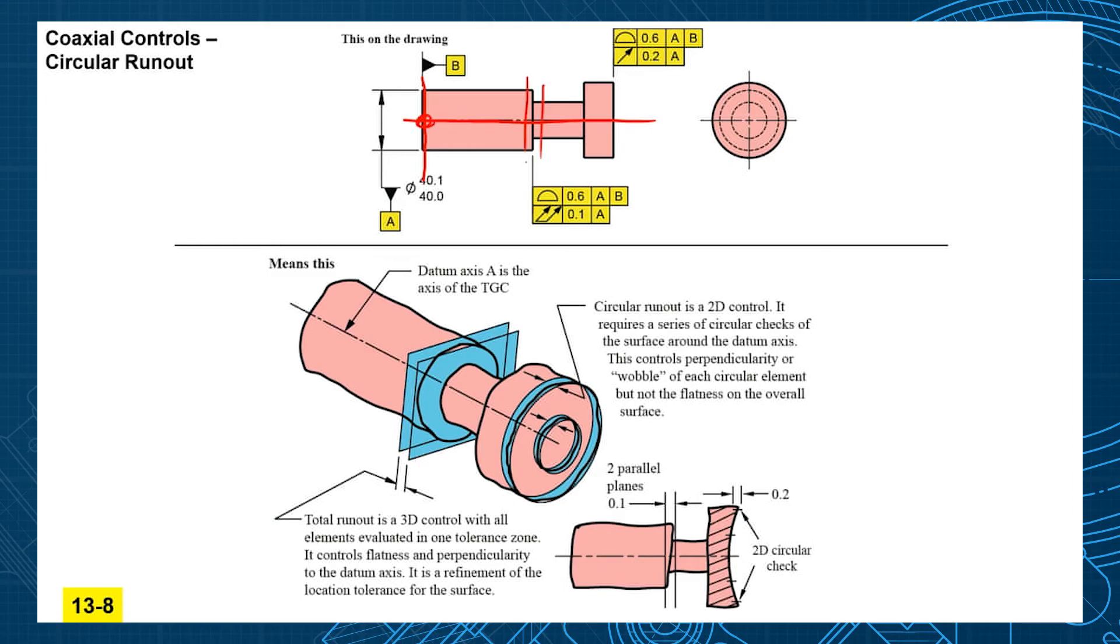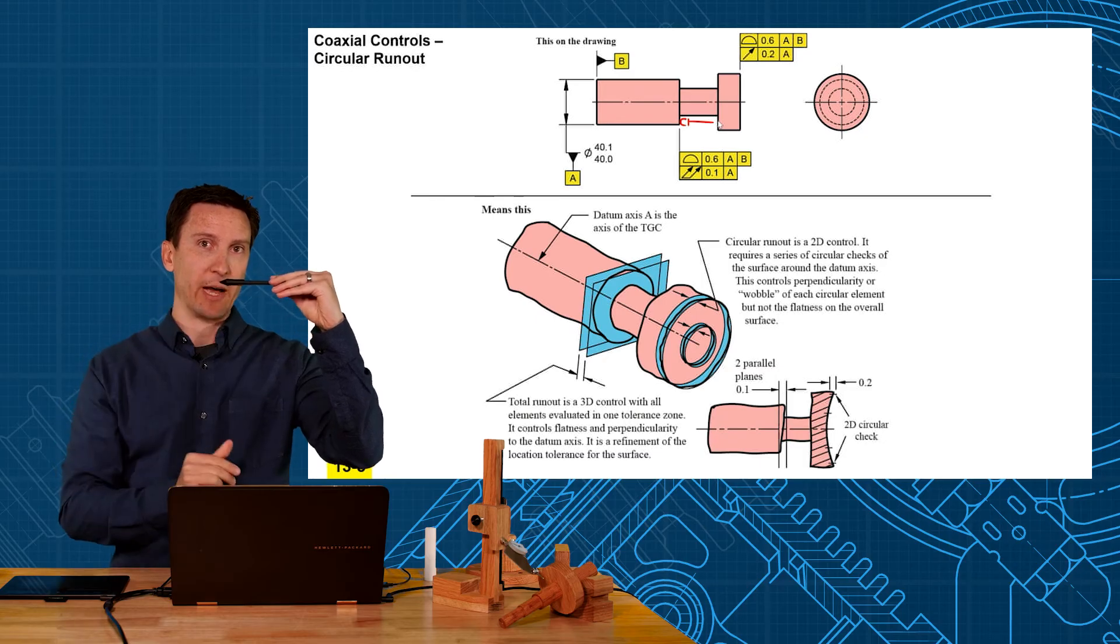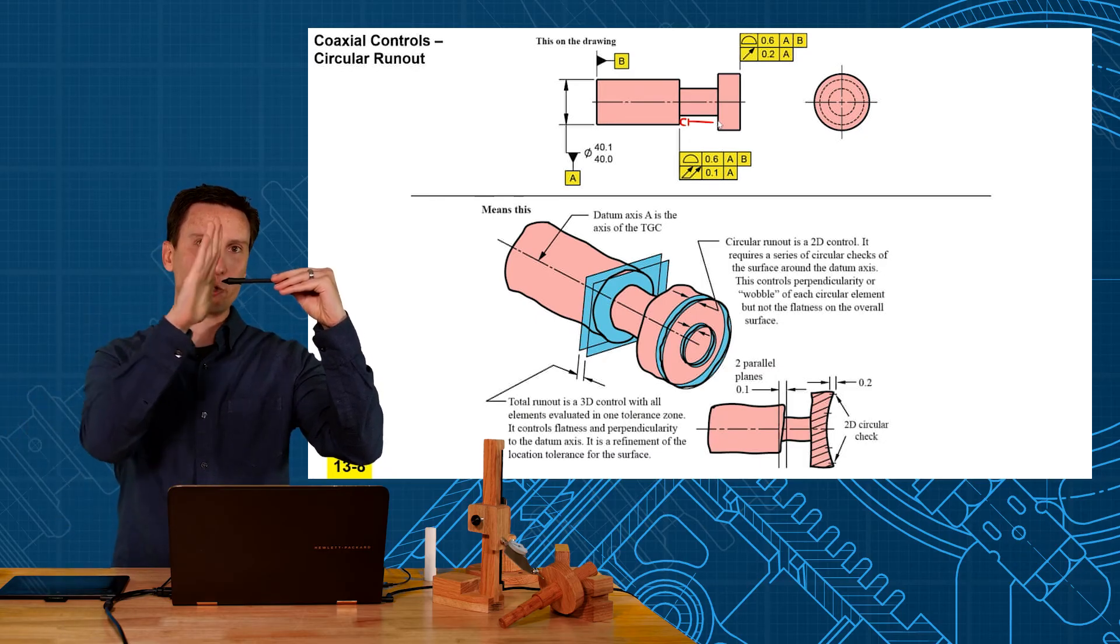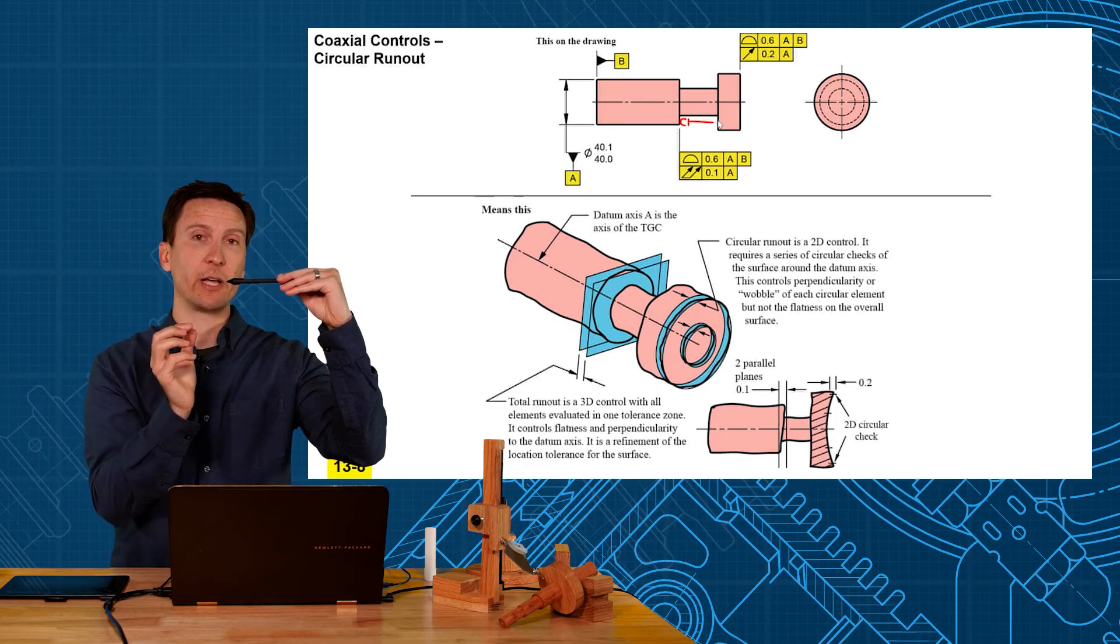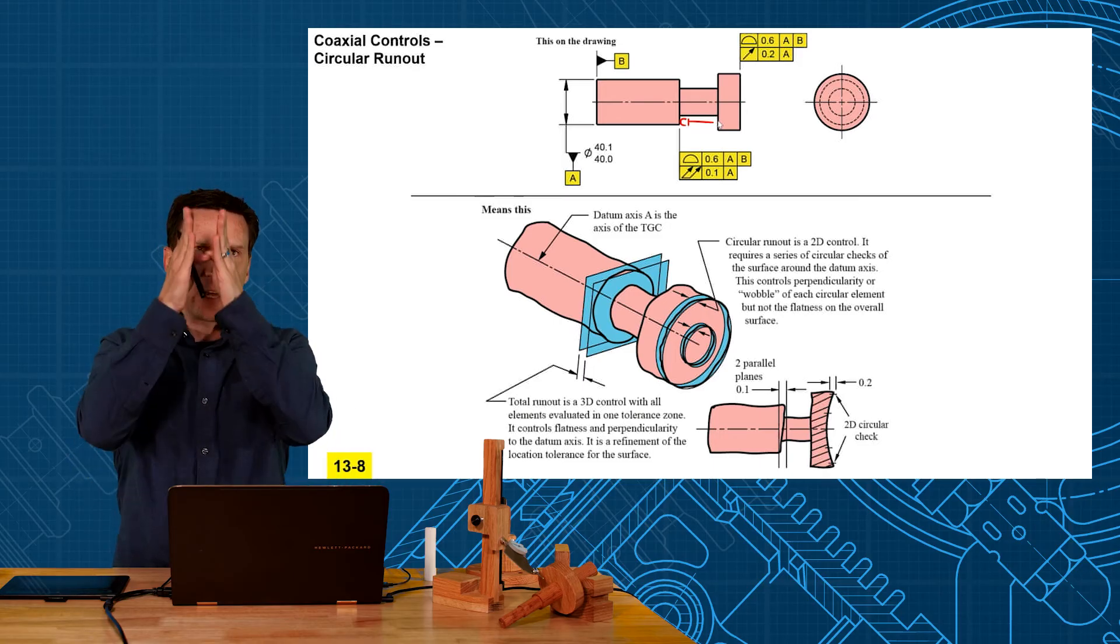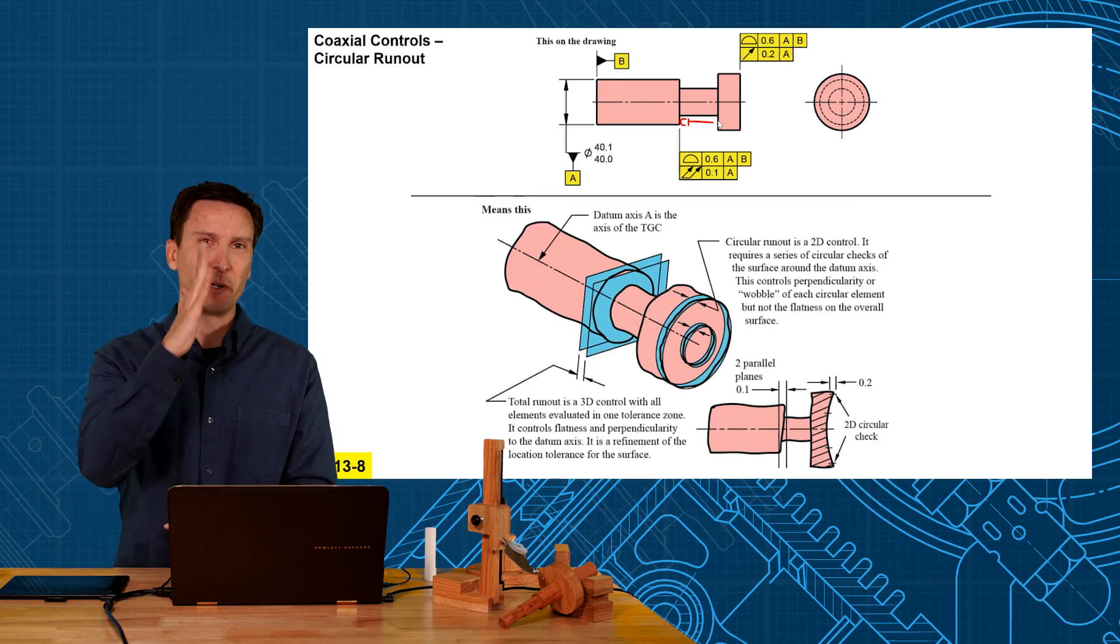We control the location of where these surfaces are going to be with a profile tolerance and that will locate that relative to the datum reference frame. Then they have a tighter total runout on there to control the orientation. The tolerance zone for this will be two parallel planes that are perpendicular to the datum axis. If you grab that feature to establish the datum axis and you put a dial indicator on that face you're watching how true that face could be. The TIR, total indicator reading, that has to be less than the 0.1.